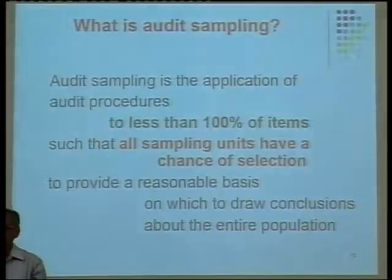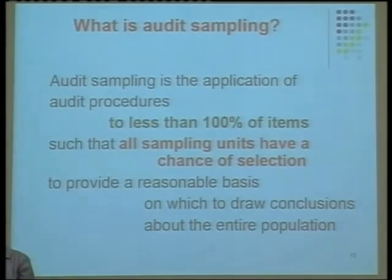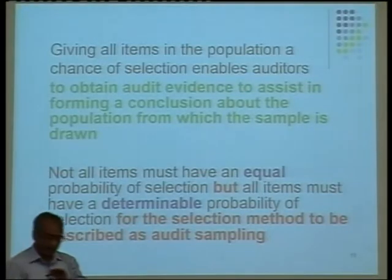Audit sampling means application of audit procedures to less than 100% of items. If we apply certain procedures to all items — for example, for debtor A we send for physical verification, in other cases we do subsequent collections, and with another we do aging — then we have tested 100% of items, and that is not sampling. When we give the chance to all items in a population, the advantage is that we can project the errors found in the sample to the entire population.